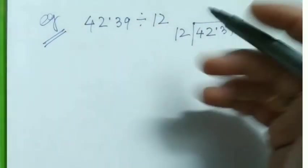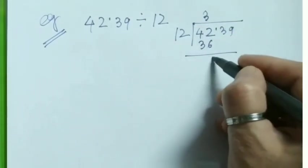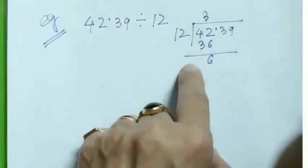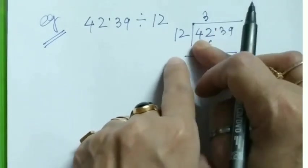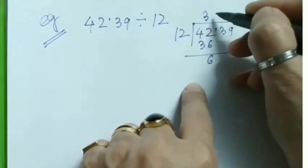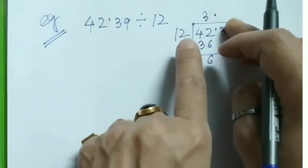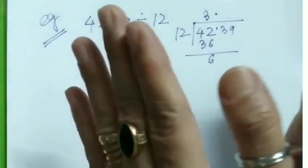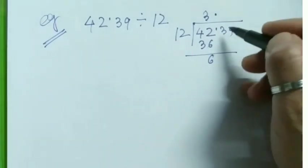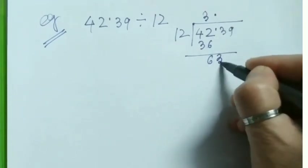42.39 divided by 12. We'll think that this point is not here and do normal division. 12 into 42 is 3, remainder 6. Bring down 3, making 63. 12 into 63 is 5, remainder 3. Now, this whole number part is complete, so we mark the decimal point just above here - right above this point. Now I'm bringing down this 3.